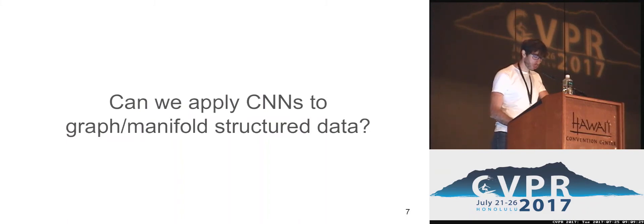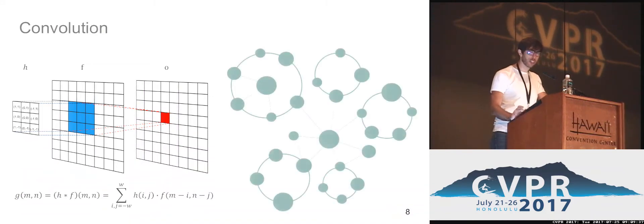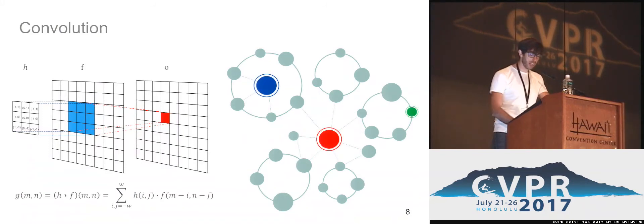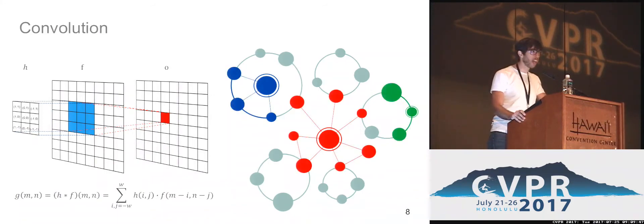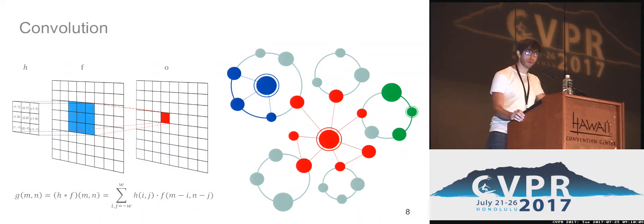Unfortunately, while convolution appears as a well-defined operation on Euclidean domains, on graphs and manifolds things are not that easy. Different vertices in a graph may show very different neighborhoods — varying in the number of vertices and the connectivity they present — making it impossible to apply convolution as we would on Euclidean domains. Therefore, in order to extend such an operation to these domains and generalize CNNs to graph and manifold structured data, we need to resort to some particular kind of construction.